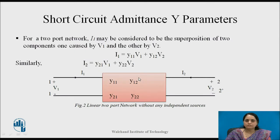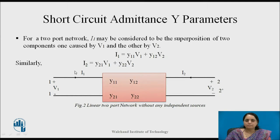In today's lecture we are going to discuss about the short-circuit admittance or Y parameters. Consider the given linear two-port network which does not have any independent sources. The current I1 at port 1 can be expressed as the superposition of responses caused by the two voltage sources V1 and V2.